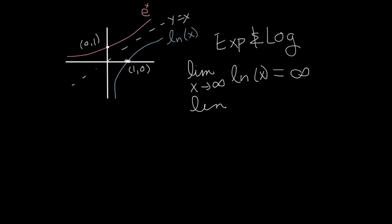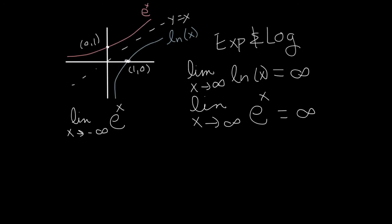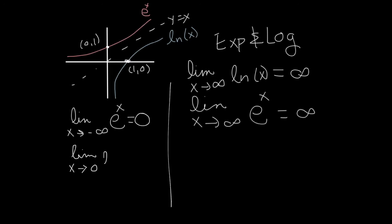As x goes to infinity, both the ln graph and the exponential graph go to infinity. If x goes to negative infinity on e to the x, the height of the exponential function goes toward zero. For the limit as x approaches zero of the ln function, the x values can only approach from the right since ln is not defined for negative x. As x approaches zero from the right, the height of the ln function shoots down to negative infinity.